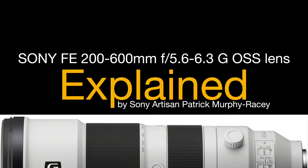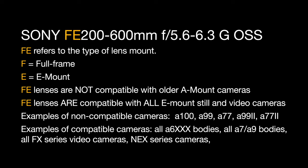The Sony FE 200-600mm 5.6-6.3 G OSS lens explained. I'm Sony Artisan Patrick Murphy-Racy. FE refers to the type of lens mount that this lens has. F stands for full frame, E stands for E-mount.